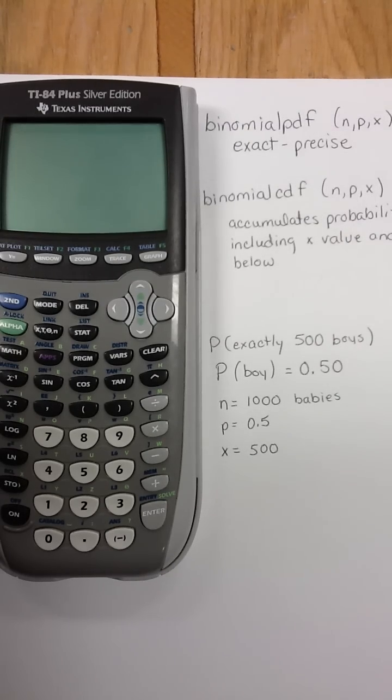In Chapter 4, Section 2, you're dealing with binomial distributions. In a binomial distribution, you only have two outcomes, either it is or it isn't.